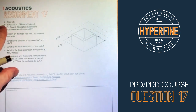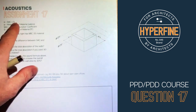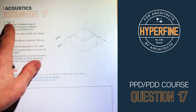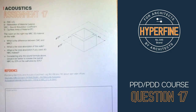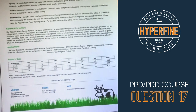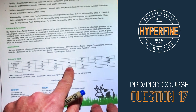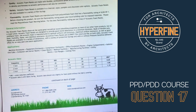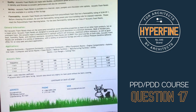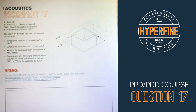In our formula, total absorption equals SAC times surface area. Since we're given NRC, we plug it in for SAC. If the question specifies something more specific — like the SAC at 1000 Hz for a two-inch panel — you'd find that specific value from the table. Otherwise, NRC is what you want.